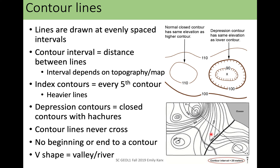This map here does not have index contours, but it does label your contour interval. Most maps will not label the interval because you can figure it out just from looking at the numbers that are labeled. The index contours are the ones with the labels. We can tell that the contour interval is 20 meters because here we have 100 and then four blanks and then 200. So it must be 100, 120, 140, 160, 180, 200 — because they are always evenly spaced.